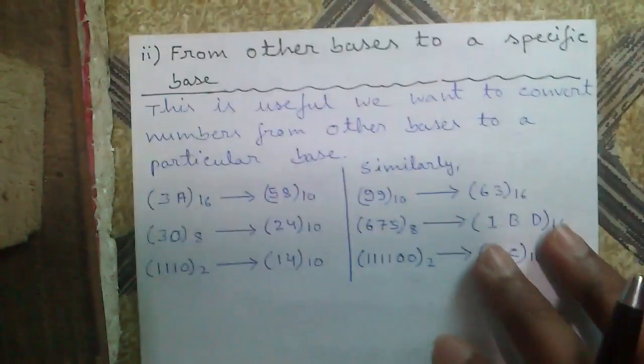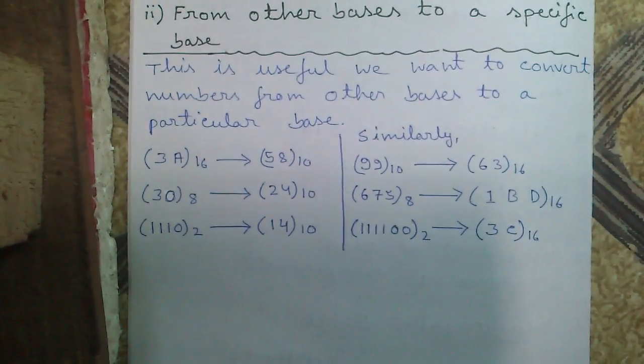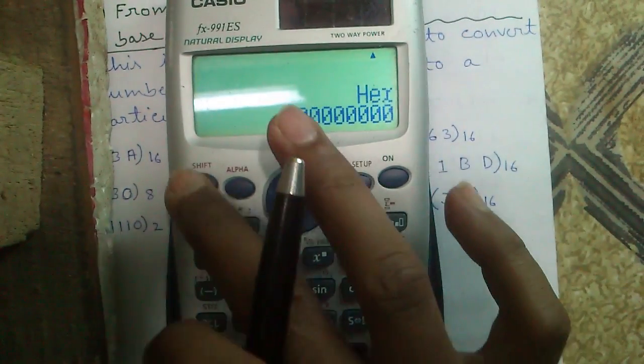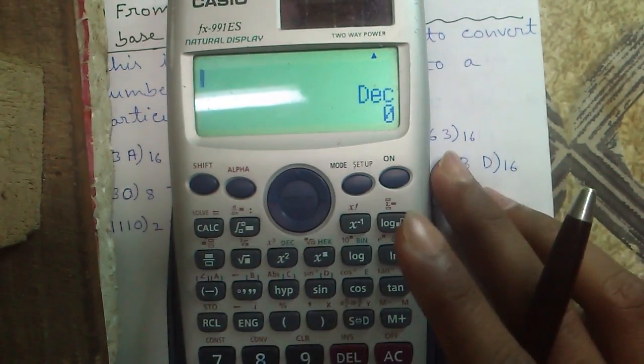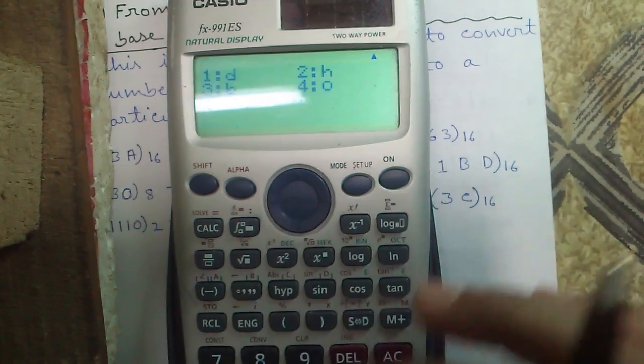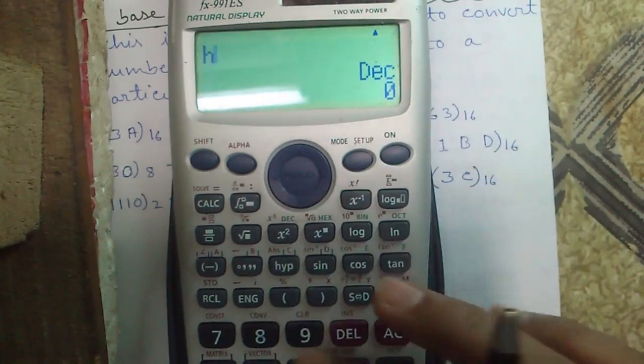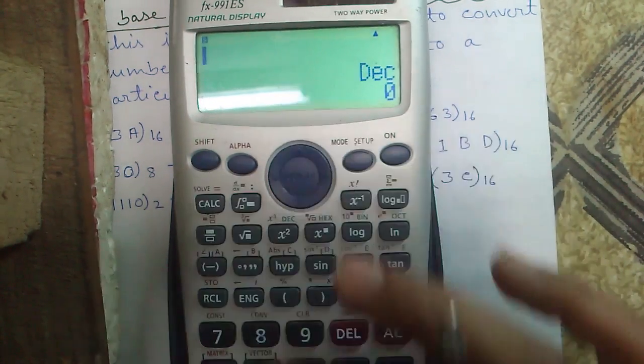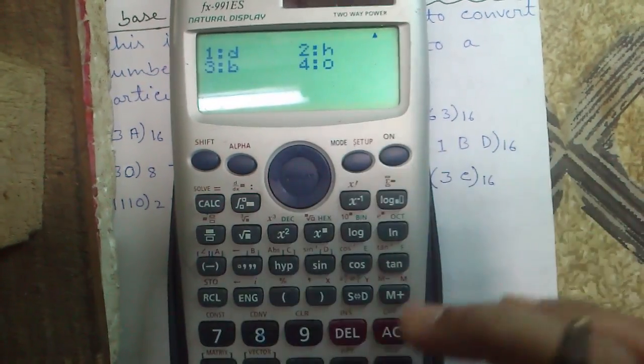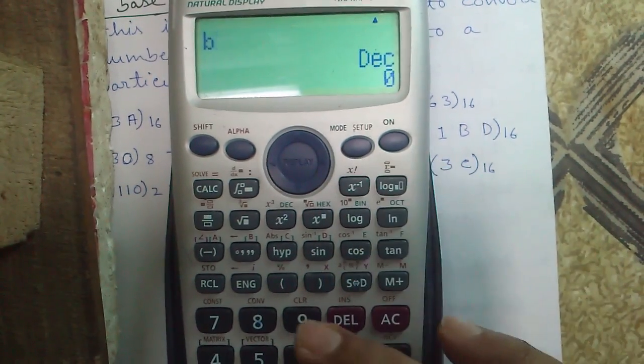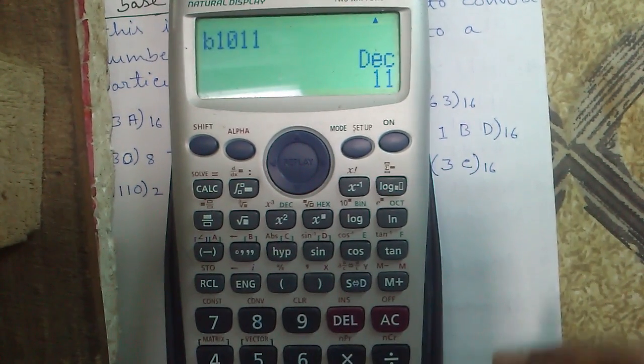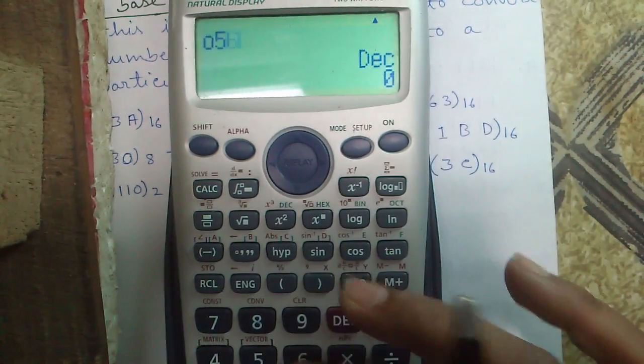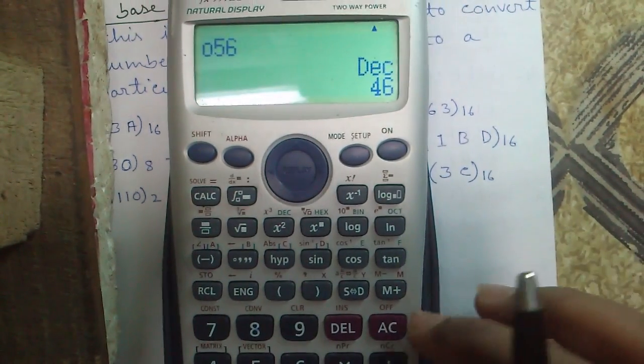Conversion number 2, from other bases to a specific base. Here the source base will vary and destination base will be same. Let's say destination base is decimal and conversion from hexadecimal to decimal. B2 is 178, conversion from binary to decimal, conversion from octal to decimal is 46.